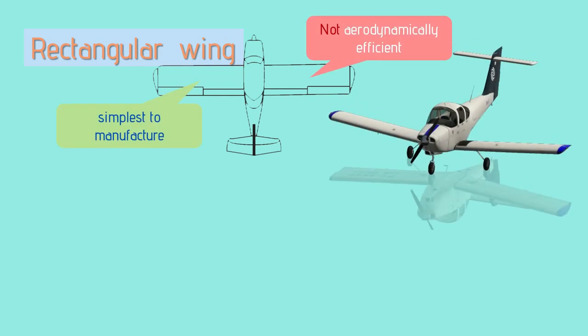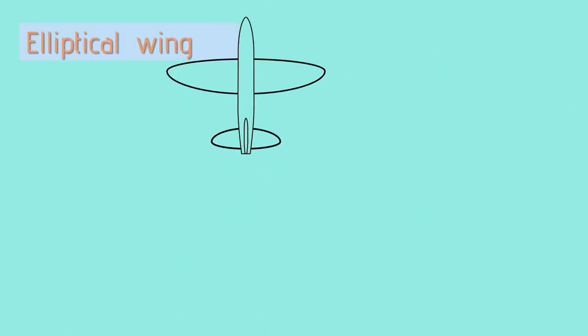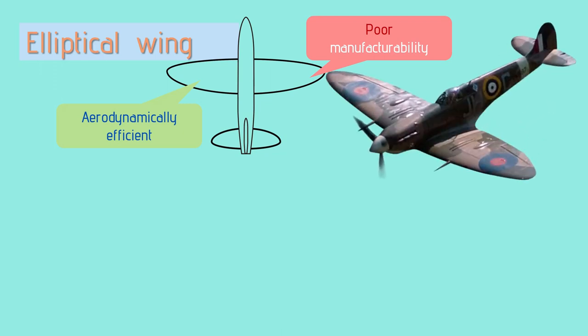The rectangular wing is excellent from a manufacturing point of view — it is a straight, untapered wing mostly used for small general aviation aircraft like the Piper PA-38 — but it is not aerodynamically efficient. The elliptical wing comes in two types: elliptical and semi-elliptical. It is aerodynamically more efficient but poor from a manufacturing standpoint. The most significant example is the Spitfire, which aimed not only to minimize drag but also create housing for the landing gear, armament, and guns inside the wing.